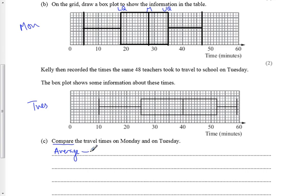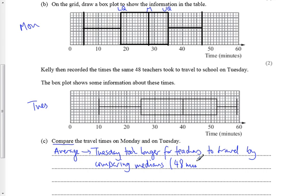So in this case, we're going to use the median. We can see the median travel time was 40 on Tuesday and 28 on Monday. So if you compare the averages, Tuesday took longer for teachers to travel by comparing the medians: 40 minutes on Tuesday, 28 minutes on Monday.